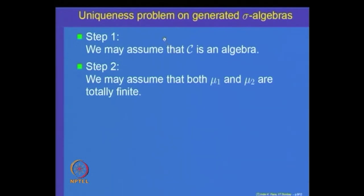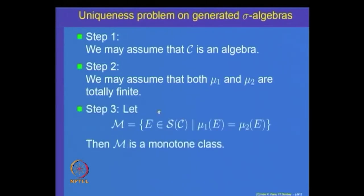We are left with the case to prove: if C is an algebra, mu_1 and mu_2 are totally finite measures defined on the algebra C, and they agree on C, then they agree on the sigma algebra S(C) generated by C. For that, define M to be the class of all elements of S(C) where mu_1 and mu_2 agree. Our aim is to prove that M = S(C).